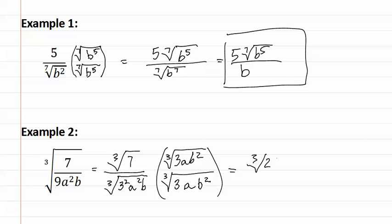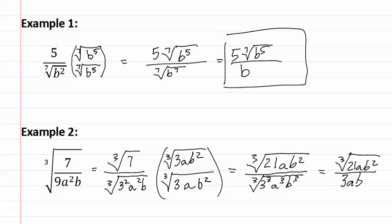This gives us the cubed root of twenty-one a b squared over the cubed root of three cubed a cubed b cubed. These then come out of the radical as three a b, and the numerator stays twenty-one a b squared, as it cannot be simplified further. This is our final answer.